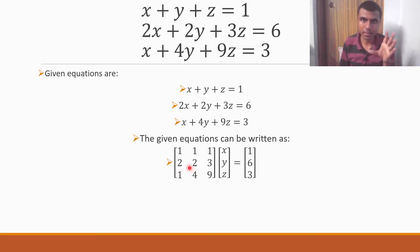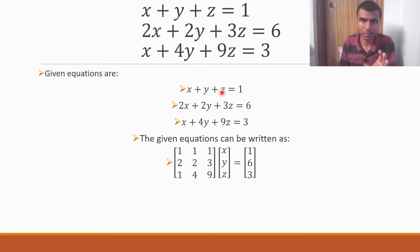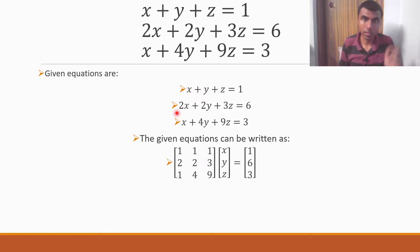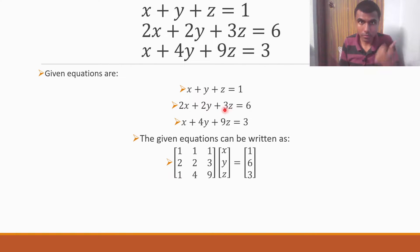How did I get the first matrix? The first matrix is made with the x, y, z coefficients. See the first equation on the LHS: x means 1 into x, y means 1 into y, z means 1 into z. So the coefficients of x, y, z are 1, 1, 1 — that's why here we have 1 1 1. Now next: 2x means coefficient of x is 2, 2y means coefficient of y is 2, and 3z means coefficient of z is 3. So 2 2 3. Likewise 1 4 9.